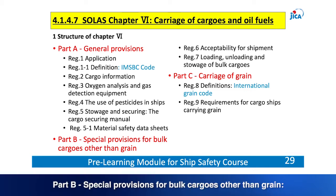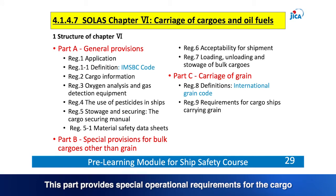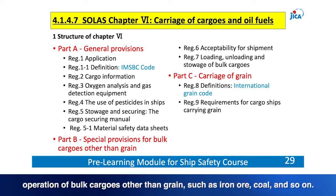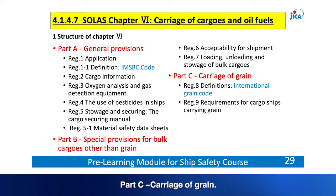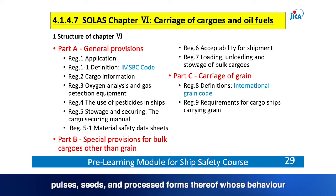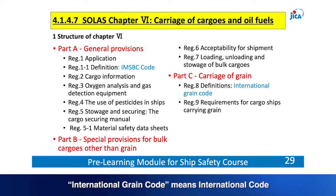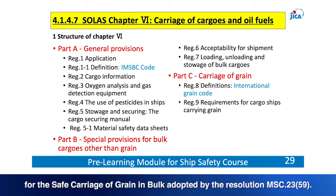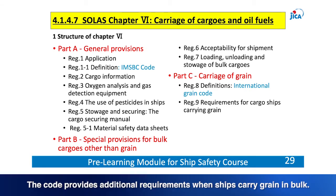Part B provides special operational requirements for bulk cargoes other than grain, such as iron ore and coal. Part C covers carriage of grain. The term grain includes wheat, maize, corn, oats, rye, barley, rice, pulses, seeds and processed forms thereof. The International Grain Code means the international code for the safe carriage of grain in bulk, adopted by Resolution MSC 23(59). The code provides additional requirements when ships carry grain in bulk and will be explained in detail in the classroom lecture.